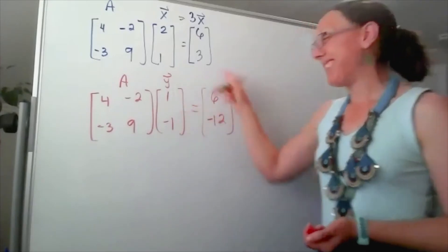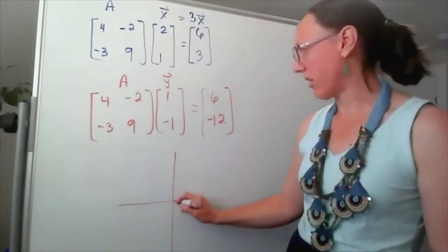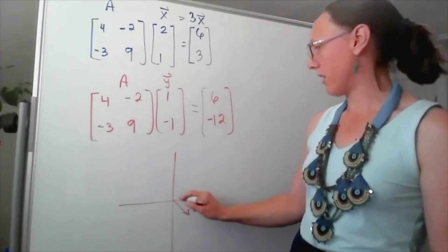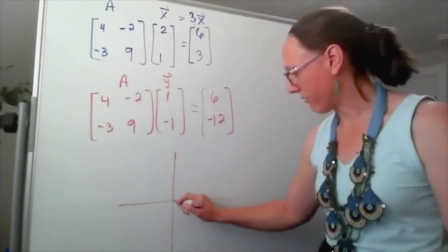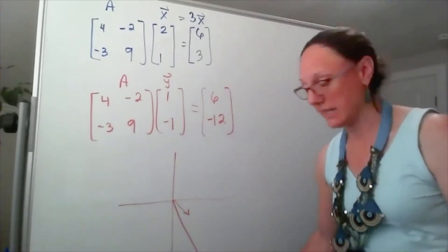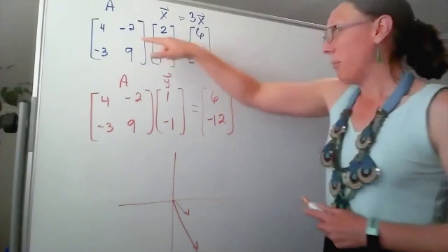This transformation just sent the vector [1, -1] to the vector [6, -12] - it's going to be down here below my screen, so I'll just put an arrow there. But when